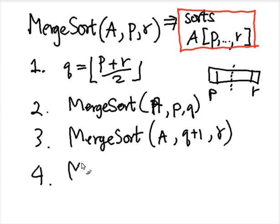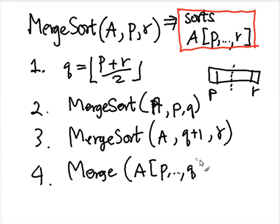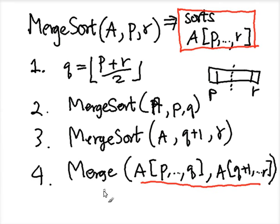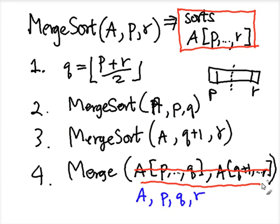Then we merge: we want to merge array A from P to Q and array A from Q+1 to R. The merge procedure we discussed last time has the same idea but takes the array in a different format. We call it as merge(A, P, Q, R) — merging the two parts back into the same array A.